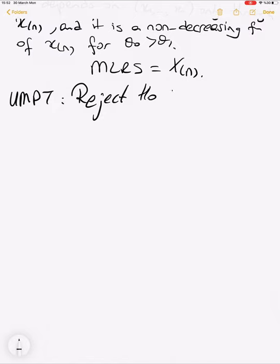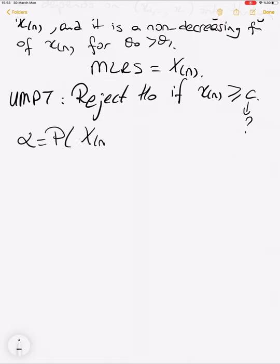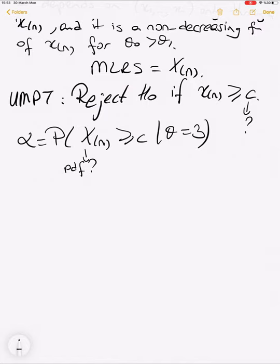Our UMPT is: reject H₀ if X_(n) ≥ c. Looking at the direction of the alternative (θ > 3), we use greater than or equal to c. To find c, we need the distribution of the nth order statistic. We set alpha = P(X_(n) ≥ c | θ = 3).